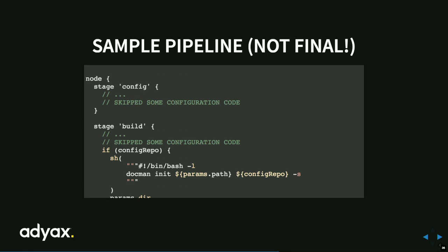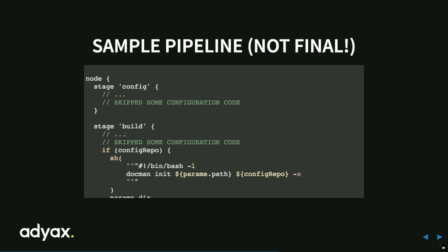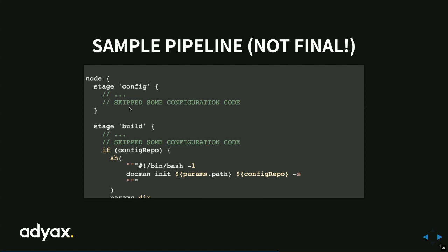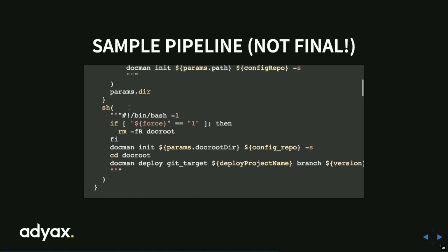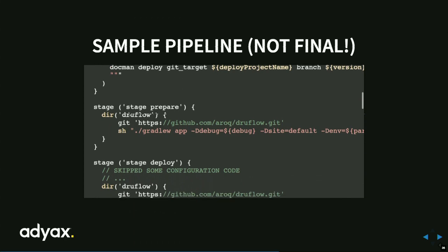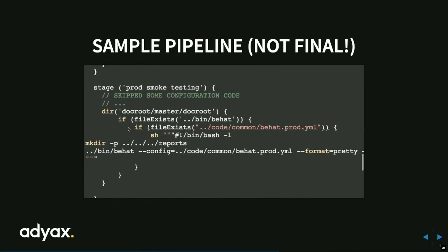Let's check how this sample pipeline looks. There's a node step that gives us a workspace and an executor from Jenkins — from the master or slave Jenkins instance. Stage config, stage build — and we can see different tools used here: Dogman, Drewflow, Behat, et cetera, all the way through the pipeline stages.